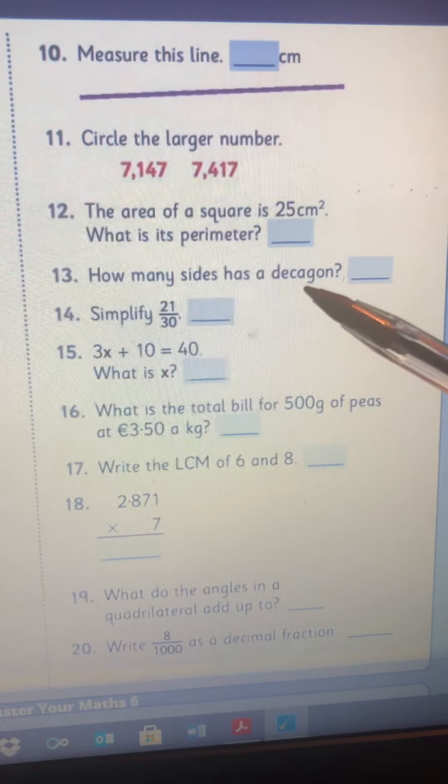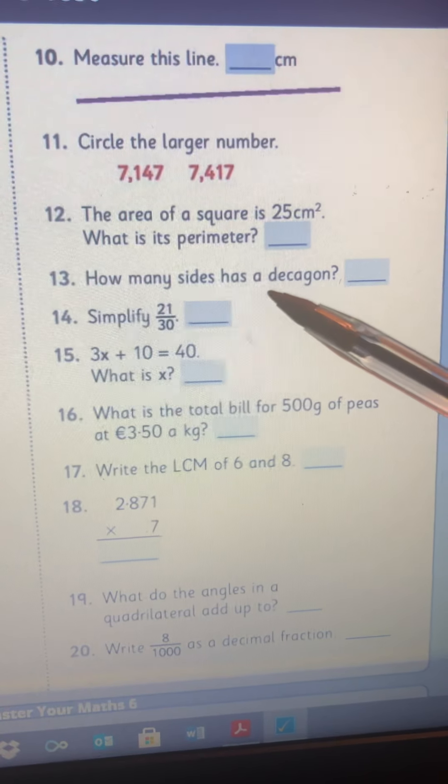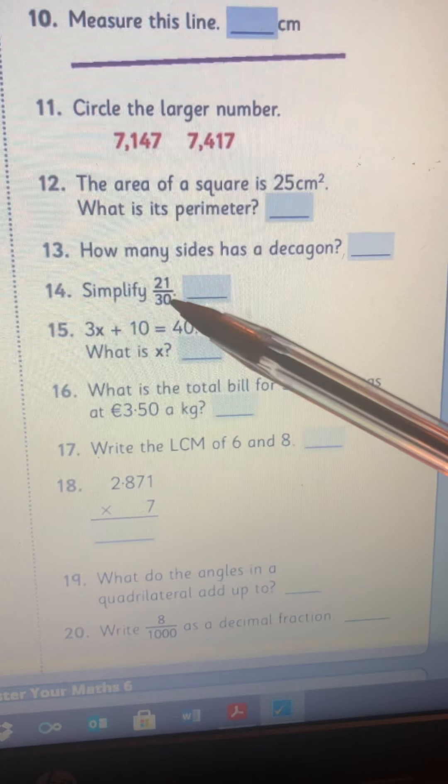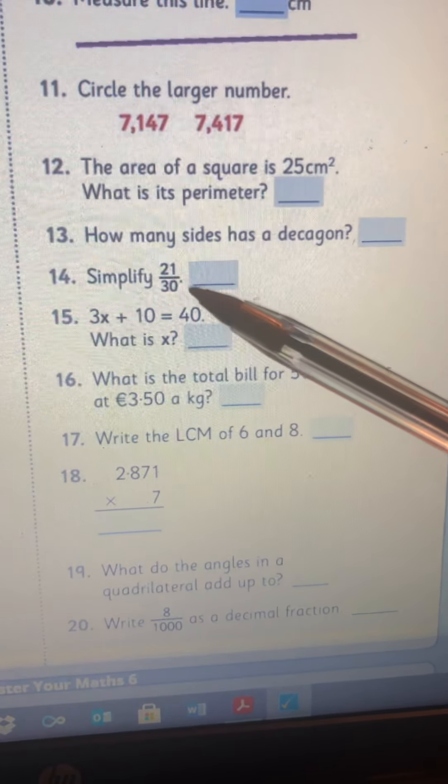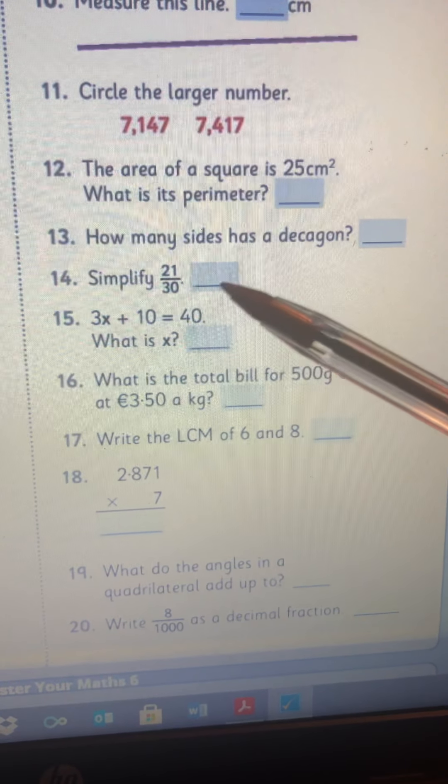How many sides is a decagon? Again, the clue is in the name de or decagon. 14, simplify it, so put it in its lowest terms. So what goes into 21? What goes into 30? Break it down that way.